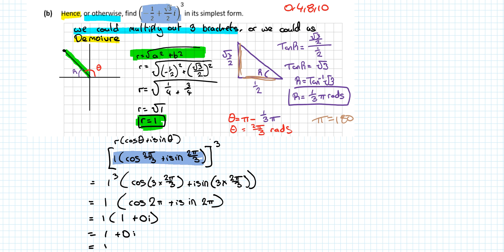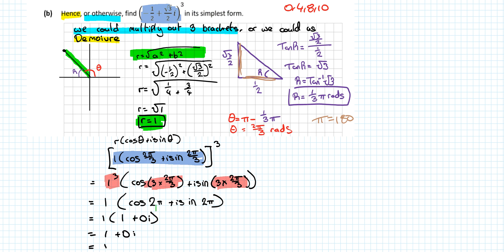De Moivre's theorem says it equals the modulus to the power — one to the power of three is one. Three multiplied by two pi over three gives two pi. So we have cos of two pi plus i sine of two pi. Cos of two pi is one, sine of two pi is zero.